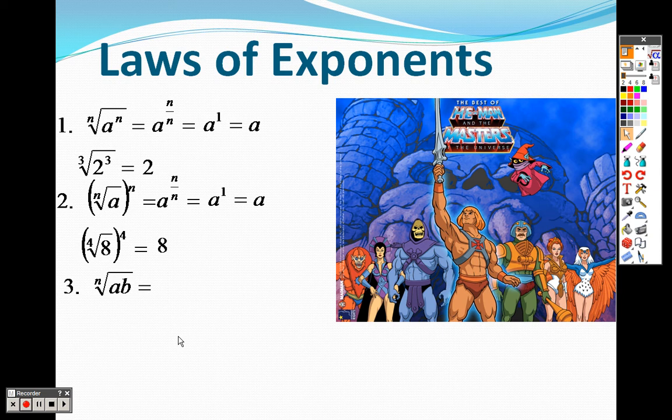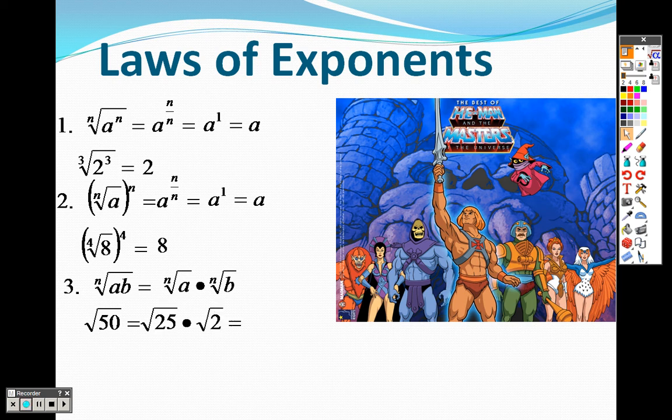The nth root of a times b—what that's saying is you can basically split it up to be the nth root of a times the nth root of b. The reason why that's important is you've already done this before when you simplified square roots.